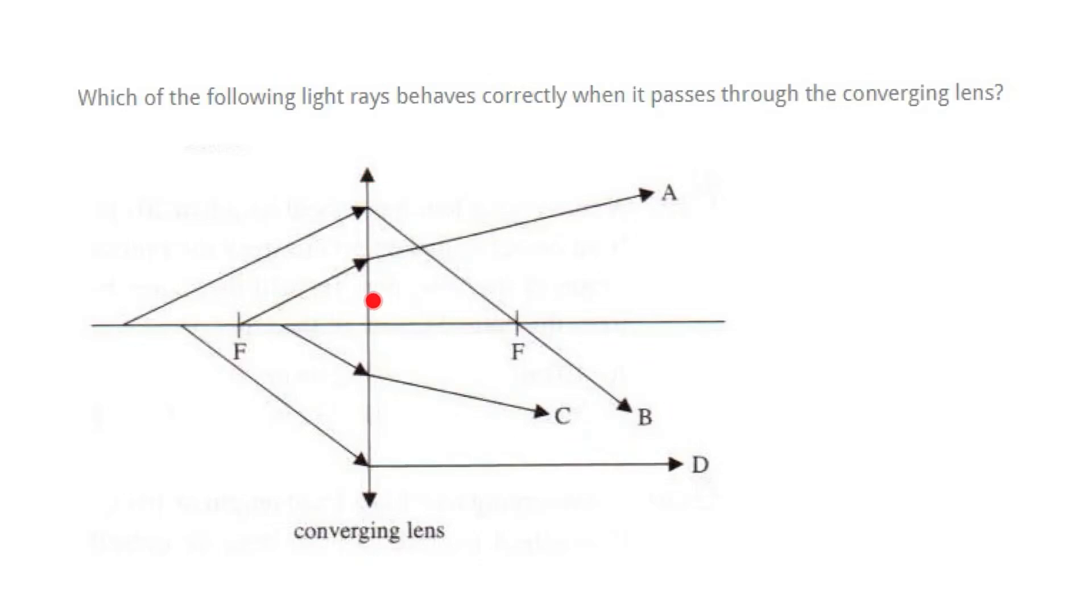In this question you are given a converging lens here and the two focal points on each side of the lens. There are four rays A, B, C, D and they ask you which of the following rays behave correctly. That means three of the rays are wrong and you're supposed to see which one is correct.